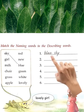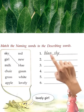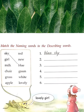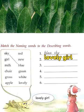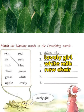Ek aapke liye kar diya hai — sky blue hota hai, toh likhenge: 'blue sky.' Phir girl — lovely, toh likhenge: 'lovely girl.' Milk white hota hai, toh likhenge: 'white milk.' Number four — chair new hoti hai, toh likhenge: 'new chair.' Number five — grass green hoti hai, toh likhenge: 'green grass.' Aur apple red hota hai, toh likhenge: 'red apple.'